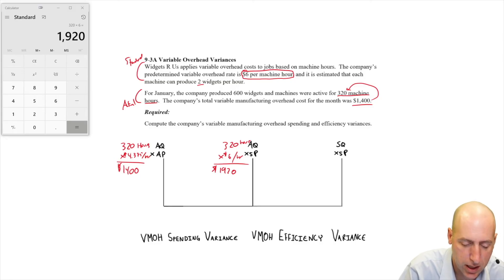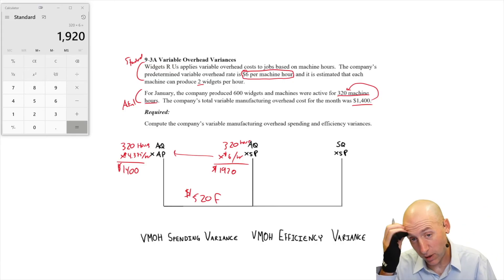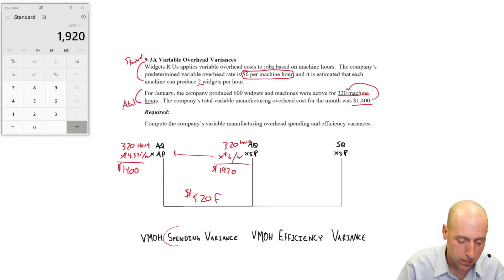The difference here between 1920 and 1400 is a variance. It is $520. And we got to say, is this favorable or unfavorable? I expect to spend $6 an hour, I spent only four. This is very much favorable. We saved money. We had a favorable variable overhead spending variance.